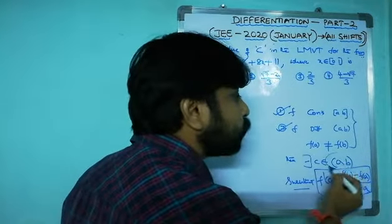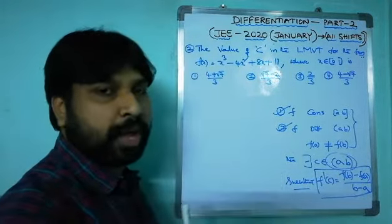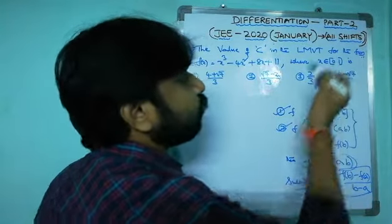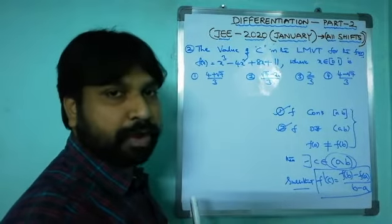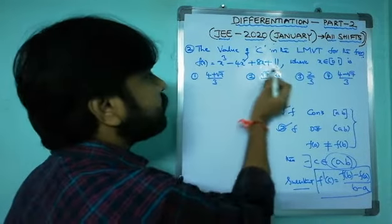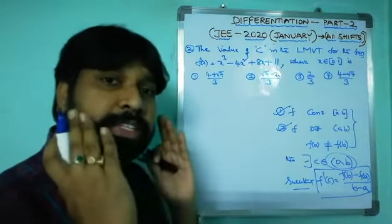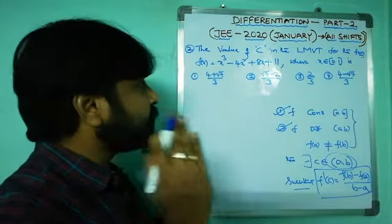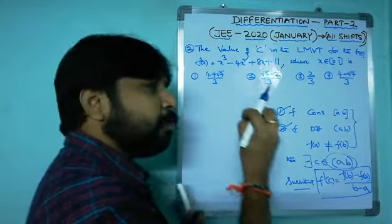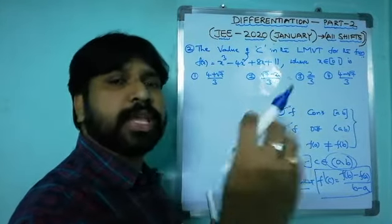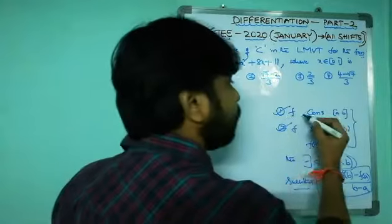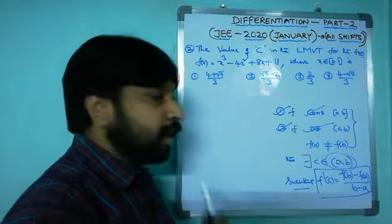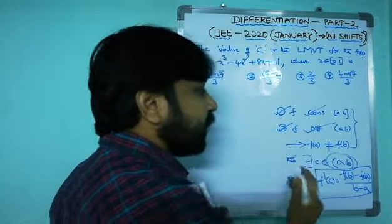Here a = 0 and b = 1. f(x) = x³ - 4x² + 8x + 11 is a polynomial of degree 3. Every polynomial is continuous as well as differentiable everywhere, so the first two conditions are clearly satisfied.